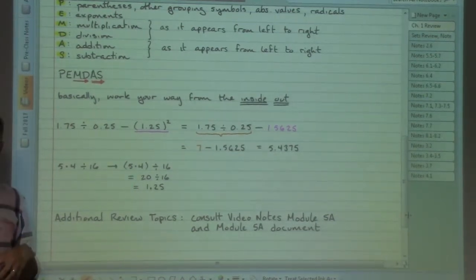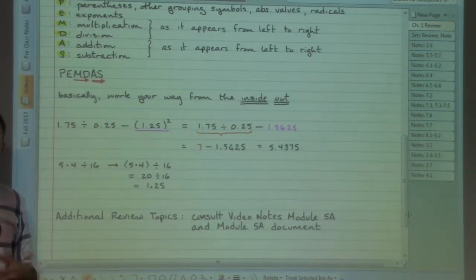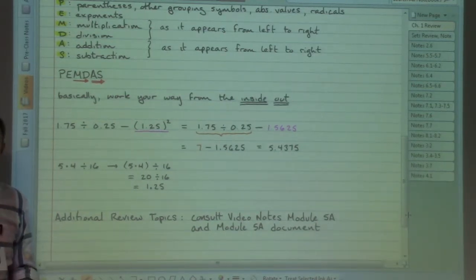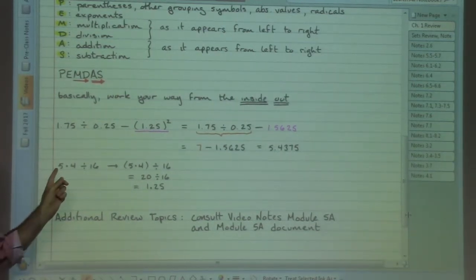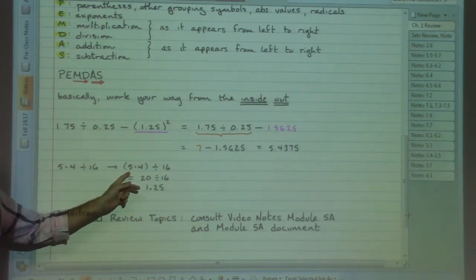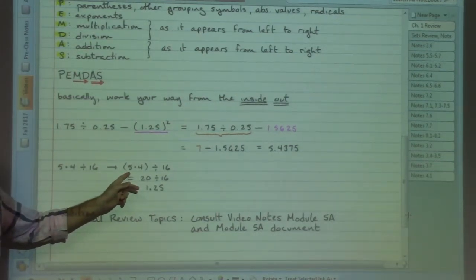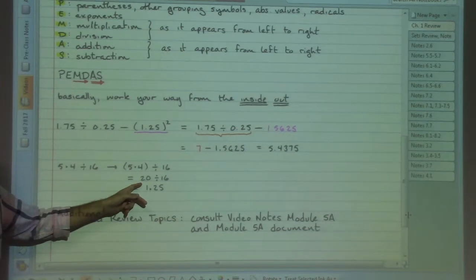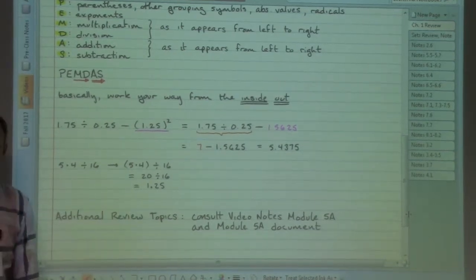Multiplying and dividing are evenly matched. Whichever one comes first as I read through the problem is what I would want to do first. So I will want to work the 5 times the 4 because it's the first part that shows up. 5 times 4 gives me 20, and 20 divided by the 16 gives me a decimal answer.